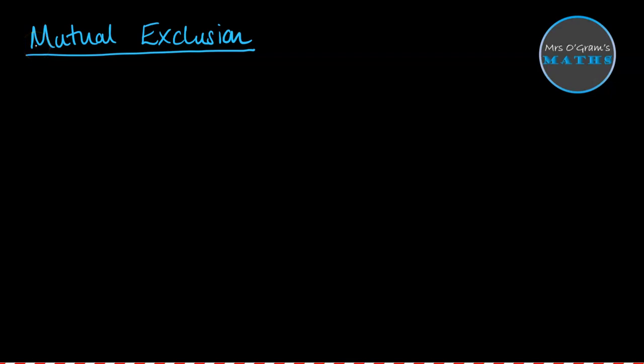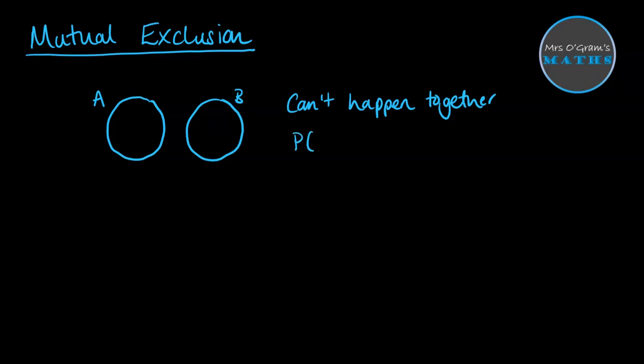The first idea we're going to look at is mutual exclusion. Mutual meaning together and exclusion meaning they stop each other from happening. So together these things can't happen. We're talking about a situation where we have event A and event B and there's no overlap, or if they did overlap on the diagram, there would be a zero in that overlap. In probability notation, the intersection P(A∩B) equals zero.